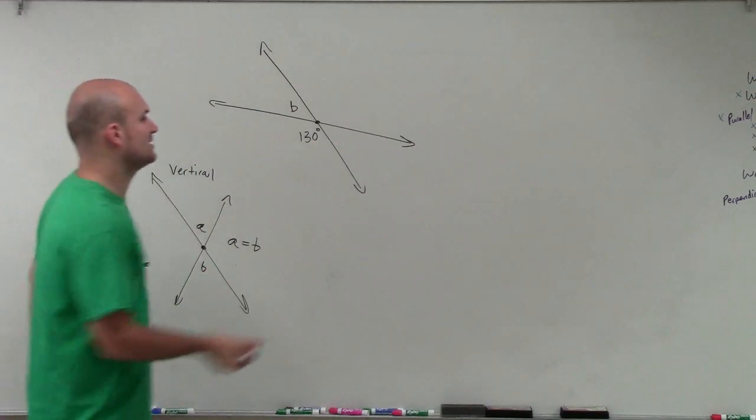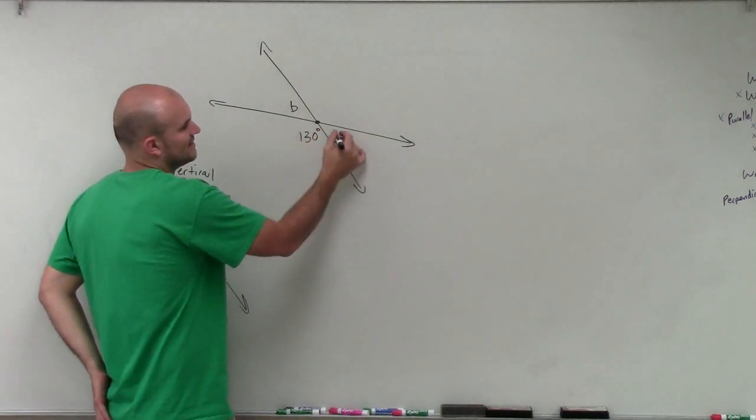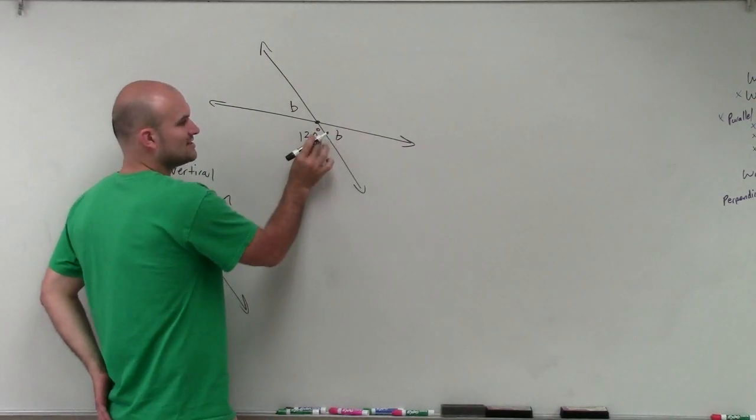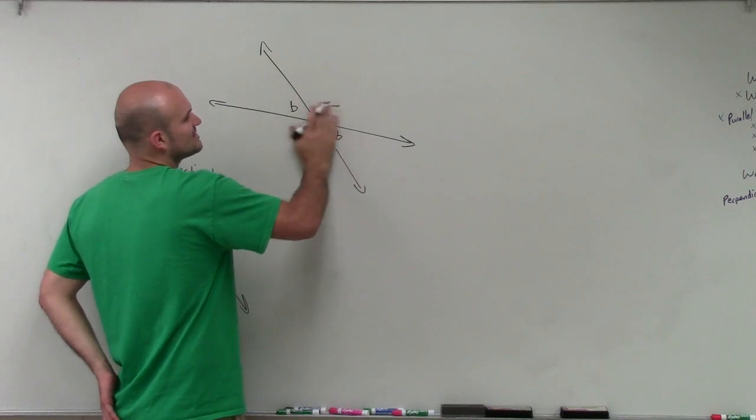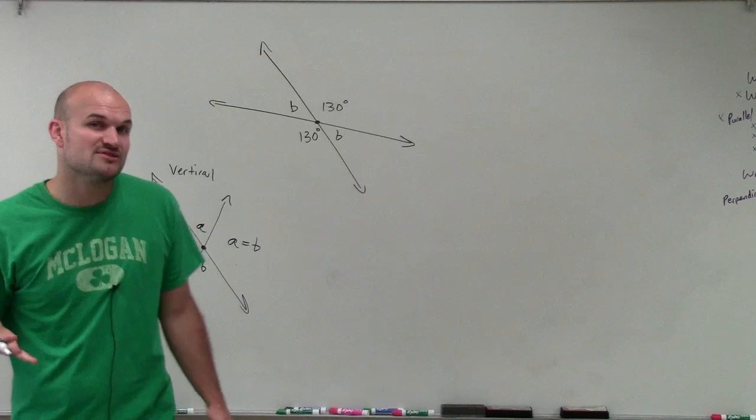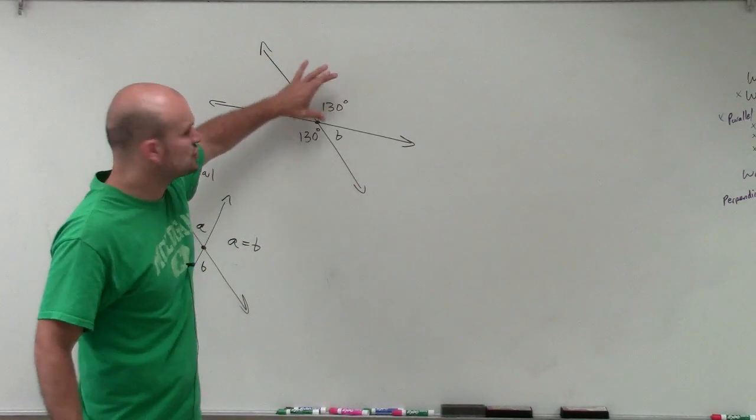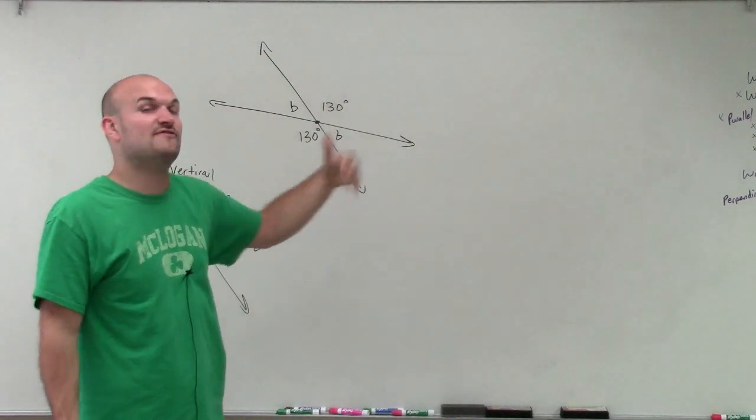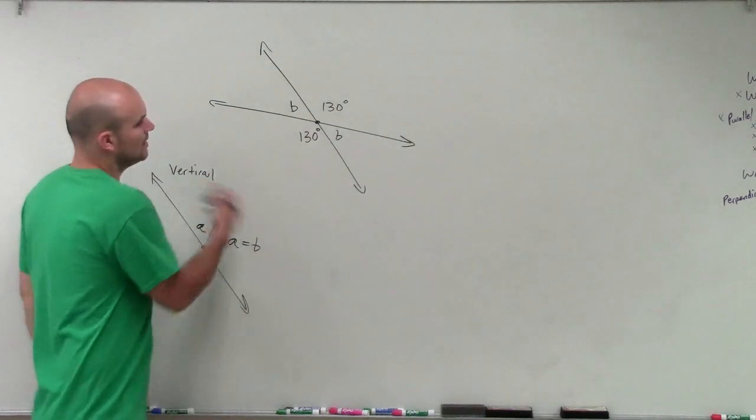Now that's very important, because if you see that, well, this is B, then that value has to be B. And if this is 130 degrees, then this angle over here has to be 130 degrees. That still doesn't help us find the value of B, but it does show us different ways that we can verify our answer is correct.